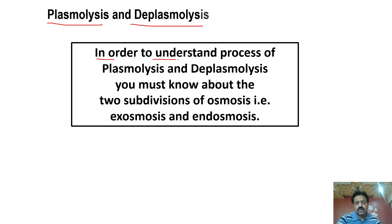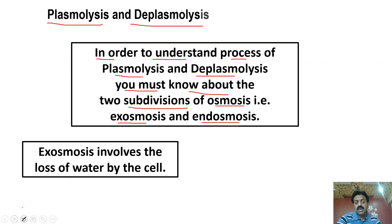First point: in order to understand the process of Plasmolysis and Deplasmolysis, you must know about the two subdivisions of Osmosis — Exosmosis and Endosmosis. Agar aap Plasmolysis aur Deplasmolysis ke process ke baare mein jaana chahte hain, toh sabse pehle aapko dono subdivisions Osmosis ki jaanni padegi. Exosmosis involves the loss of water by the cell — agar koi bhi cell paani lose karta hai, toh is condition ko Exosmosis kehte hain.